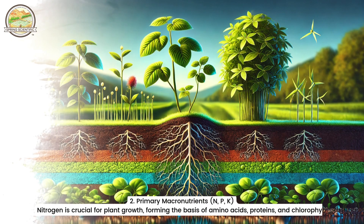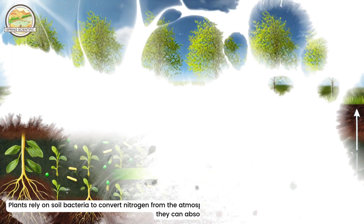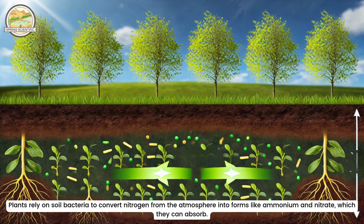Primary macronutrients: N, P, K. Nitrogen (N) is crucial for plant growth, forming the basis of amino acids, proteins, and chlorophyll. Plants rely on soil bacteria to convert nitrogen from the atmosphere into forms like ammonium and nitrate, which they can absorb.